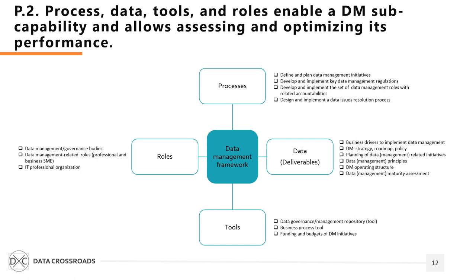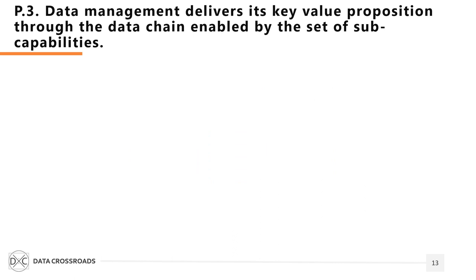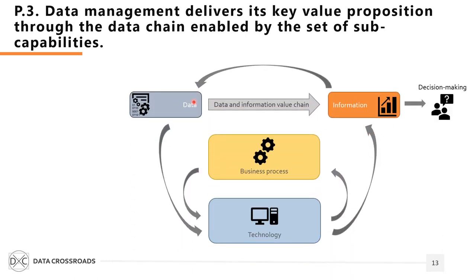This model allows you to measure the maturity of data management and specify key performance indicators. Principle 3 outlines that data management delivers its key value proposition through the data chain enabled by a set of sub-capabilities. There are some other value propositions such as control and safeguarding of data and information resources and creation and utilization of the value of these resources. These value propositions are at a higher level of abstraction; for different data stakeholders you must break them down. Data management delivers these propositions by answering five key questions each data stakeholder should have.